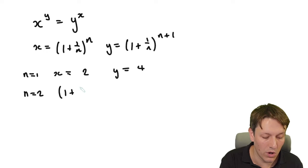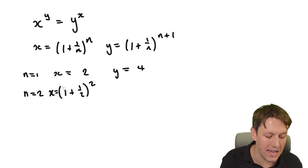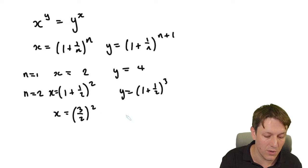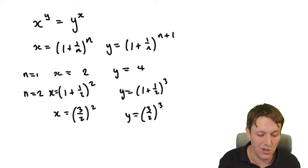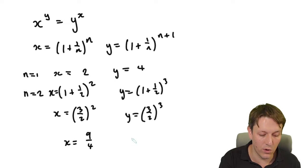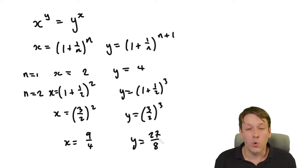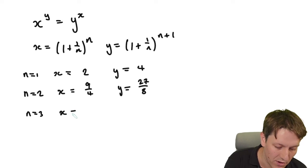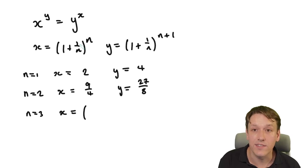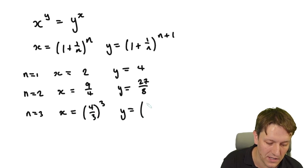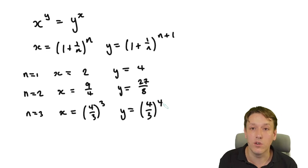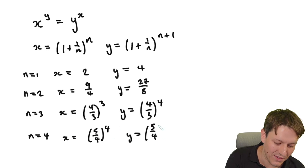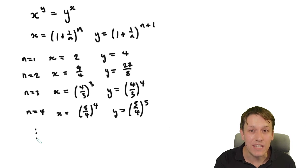For n equals 2, x equals (3/2) squared equals 9/4 and y equals (3/2) cubed equals 27/8 — rational numbers satisfying the equation. For n equals 3, x equals (4/3) cubed and y equals (4/3) to the 4. For n equals 4, x equals (5/4) to the 4 and y equals (5/4) to the 5. We can keep generating infinitely many such values.